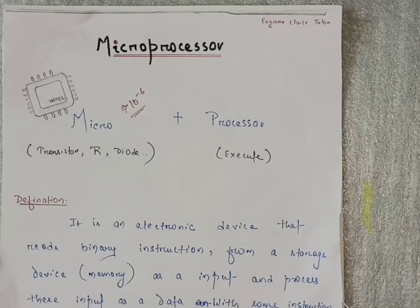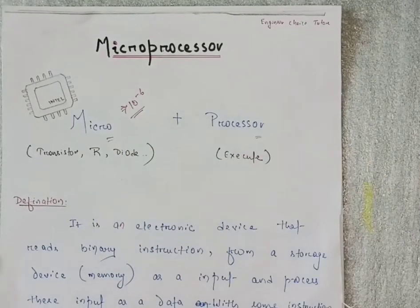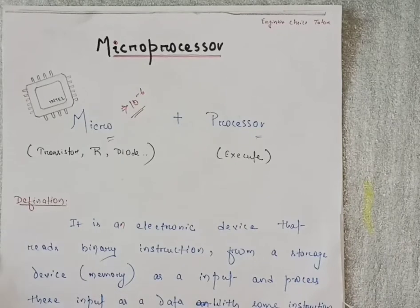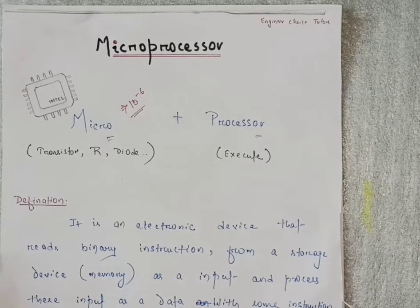What is microprocessor? As the name suggests, it comprises of two words: micro and processor. Micro is basically the size of the component, that is 10 to the power minus 6.